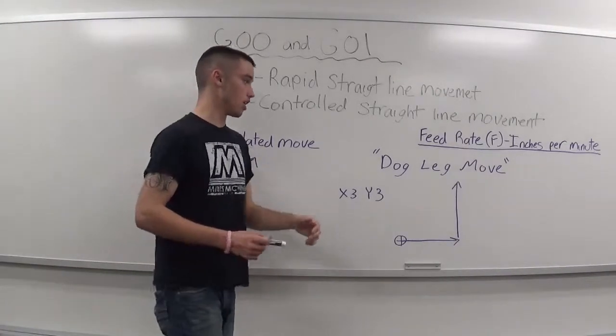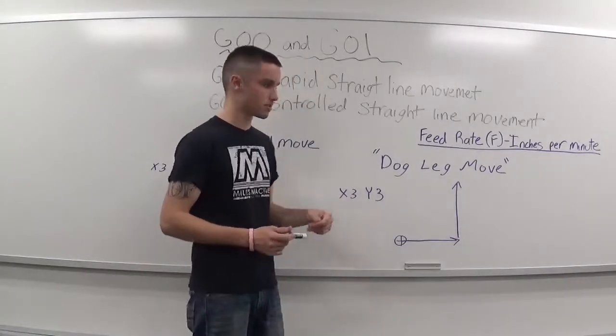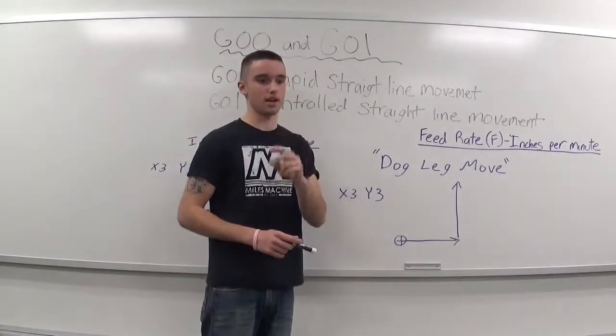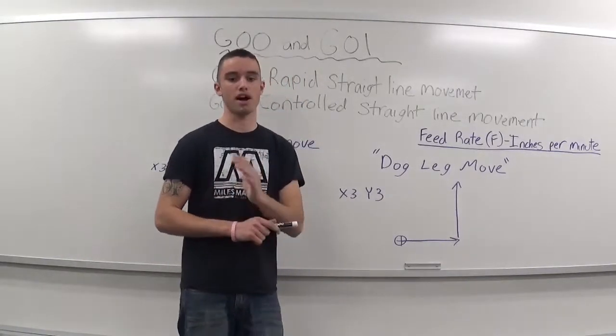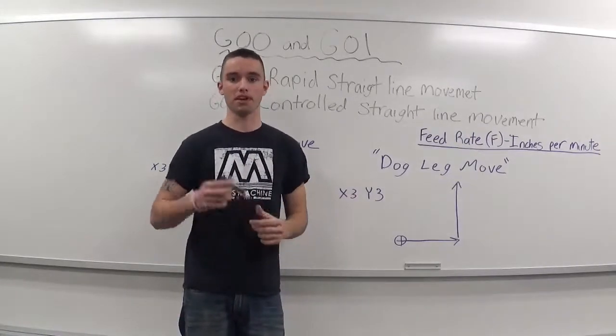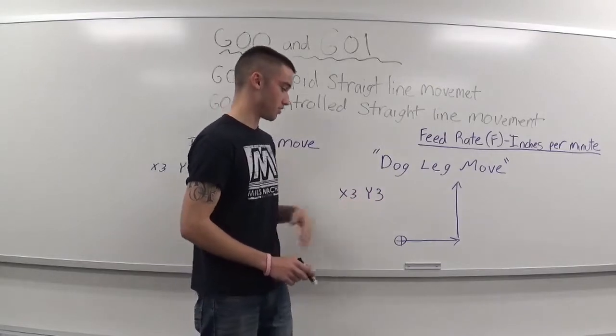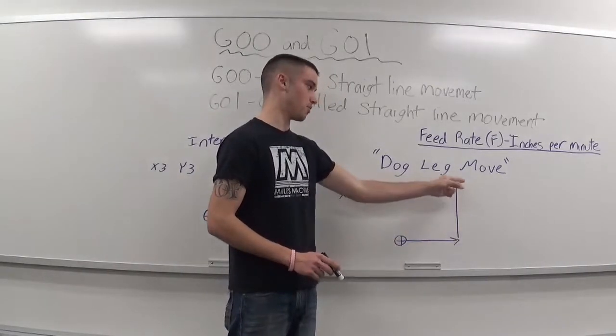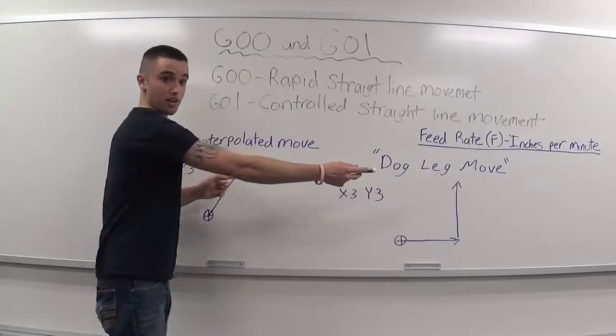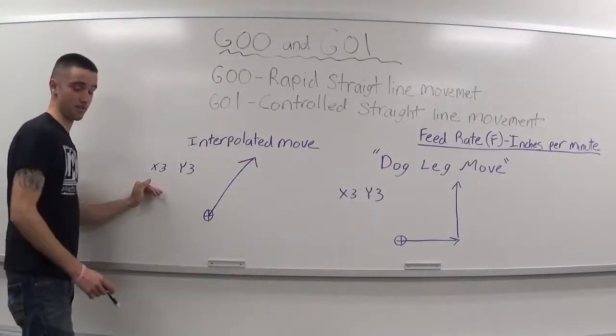Your dogleg move, you'll see that in a lot of older machines. That's where only one axis move at a time. You can call it five axes in one block of code, but you're only going to see the machine moving one axis at a time. So for example, x3, y3, starting here at zero, going over to an x3 and up to a y3. We master the same point, but this just takes longer and this is a lot more convenient.